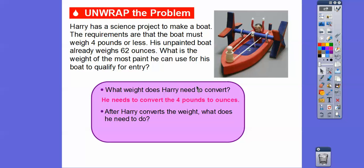Okay, well, after we figure out this is the maximum weight he can have, after we convert four pounds to ounces right here, then we're going to subtract how much his boat weighs from that, and that'll tell us how much paint is left. So he'll need to subtract 62 ounces from that number to see how much paint he can use.